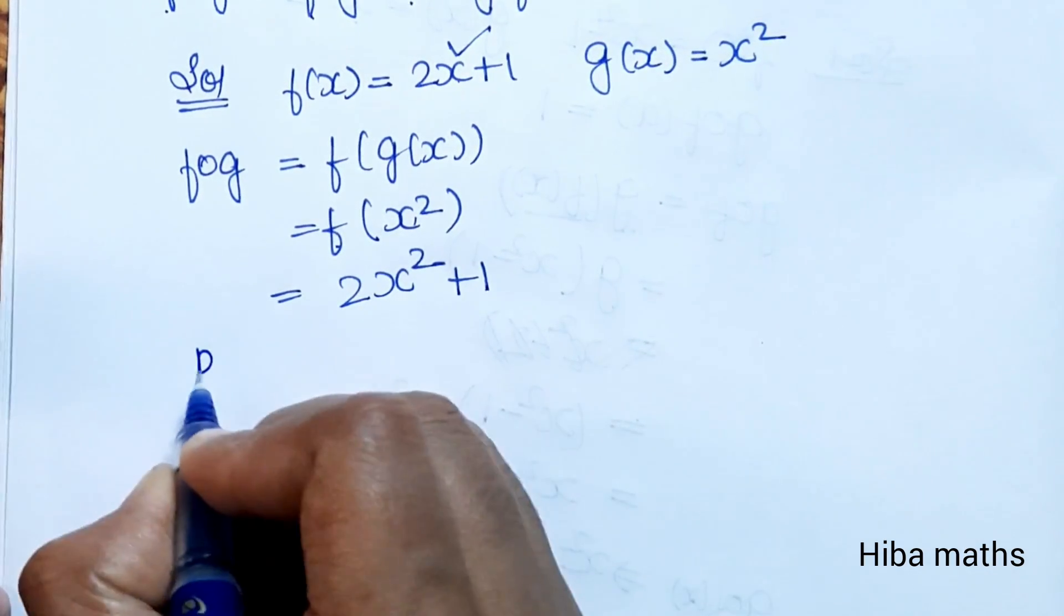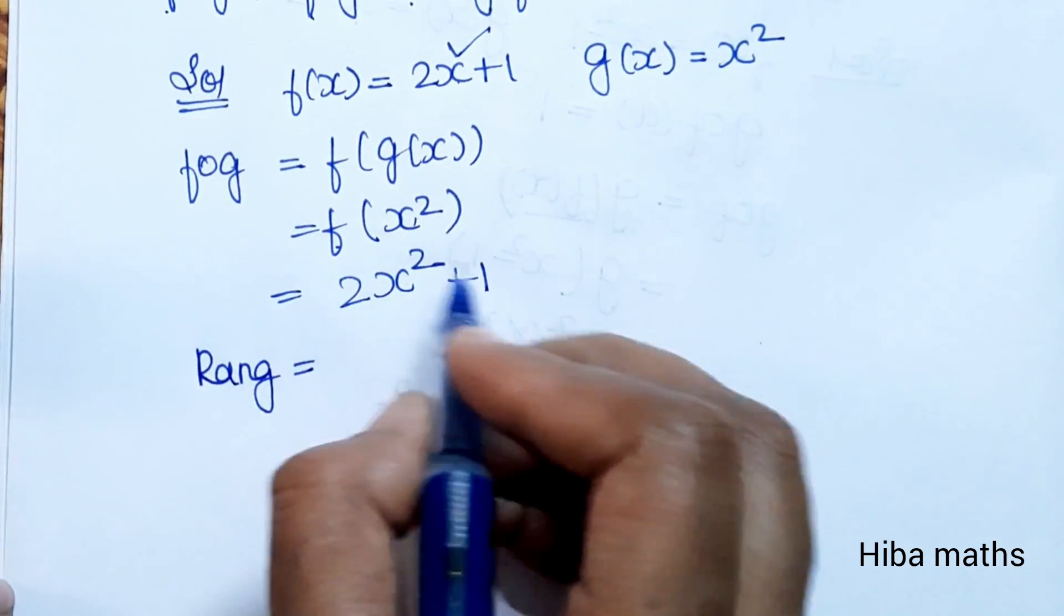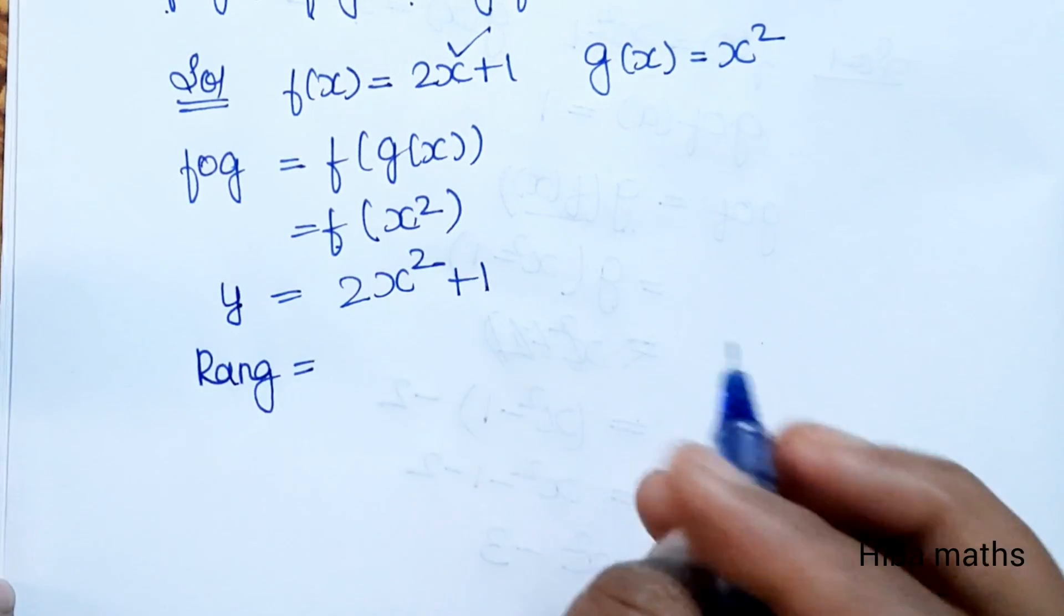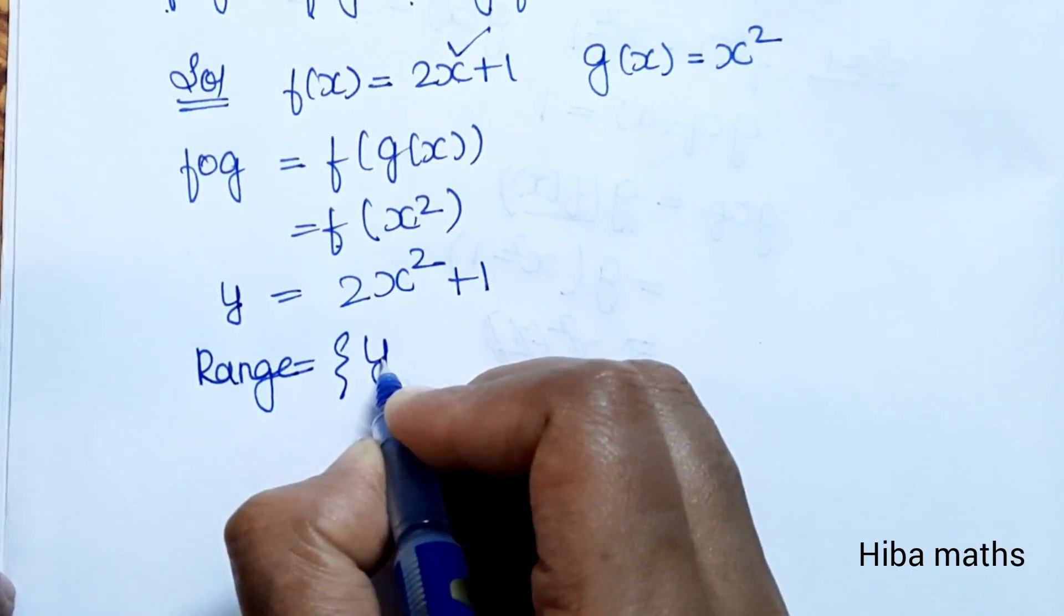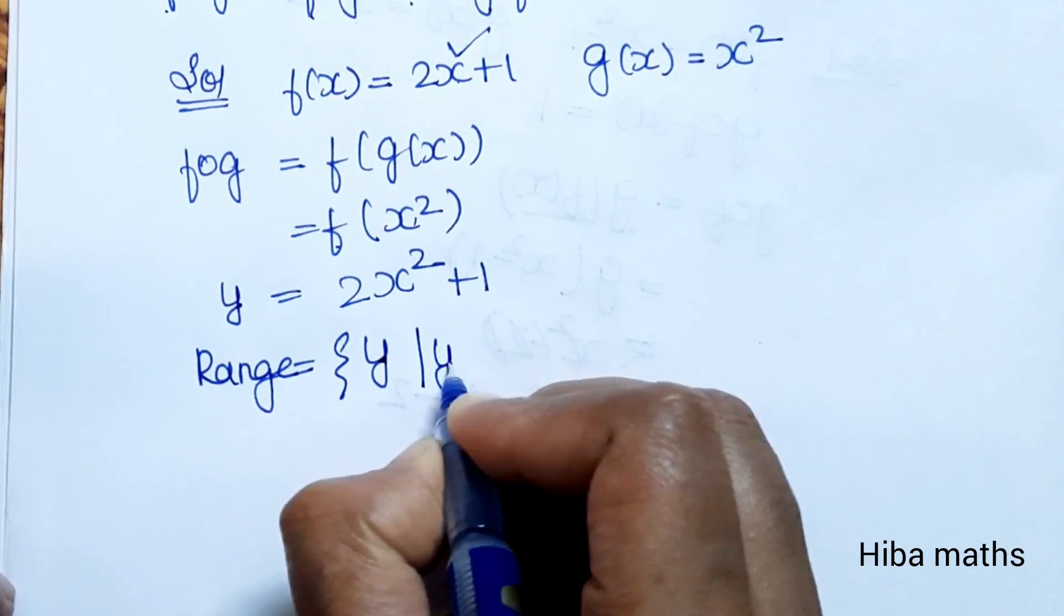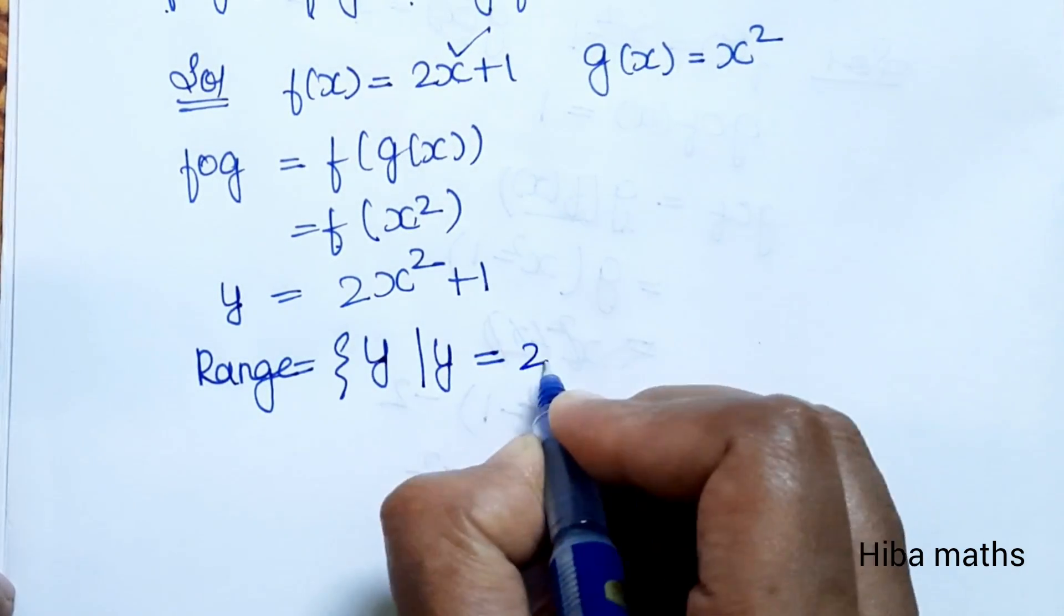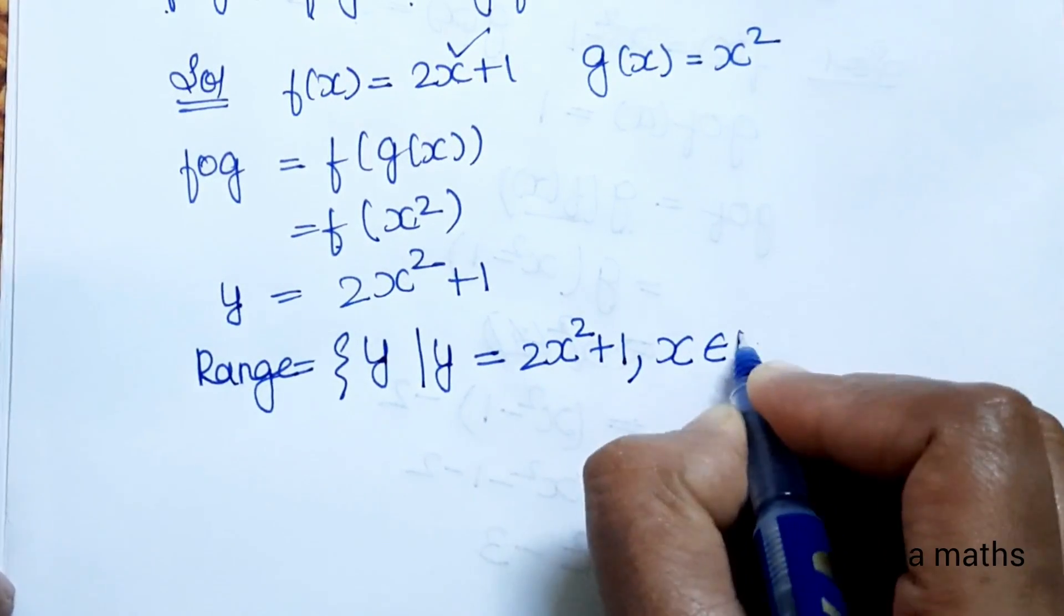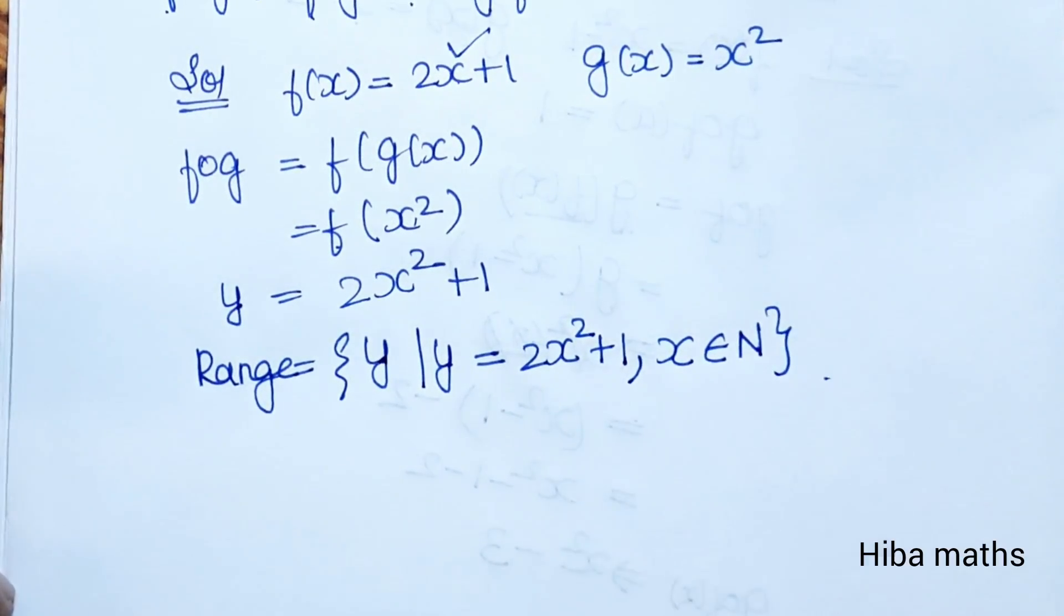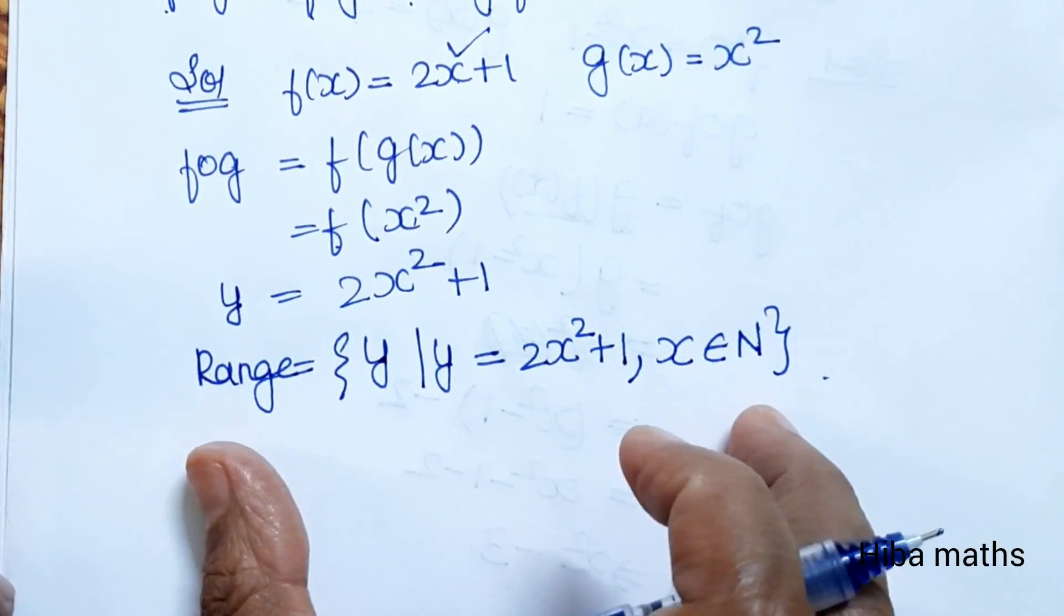The range of f∘g is {y | y = 2x²+1, x ∈ ℕ}. You can see this in the format.